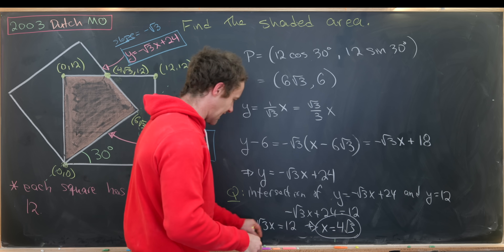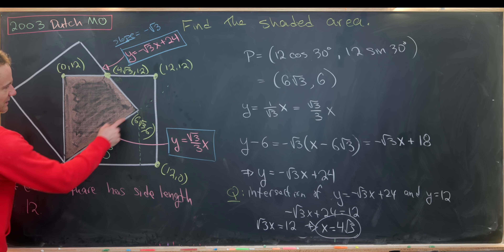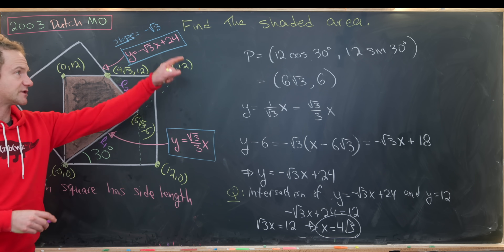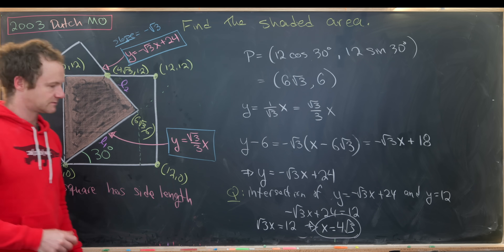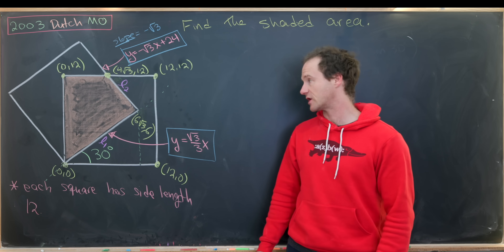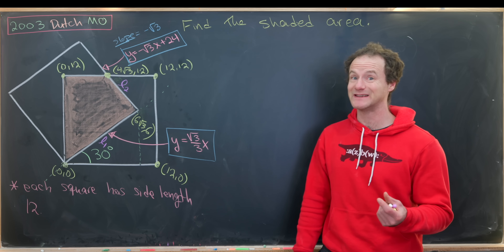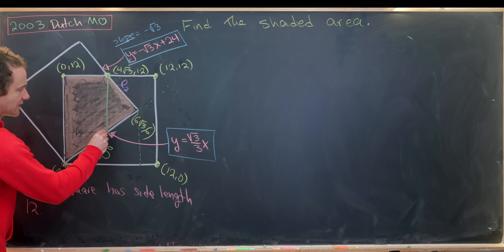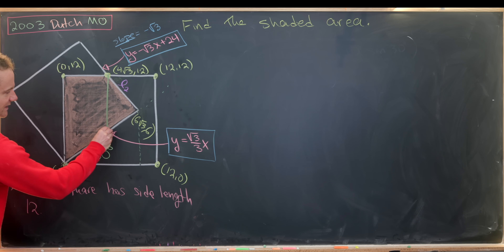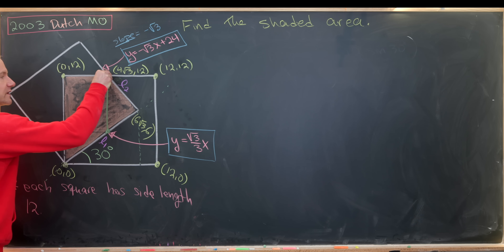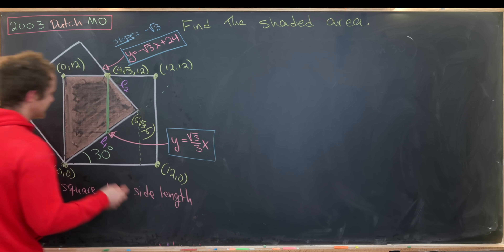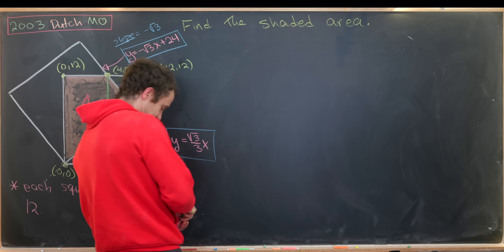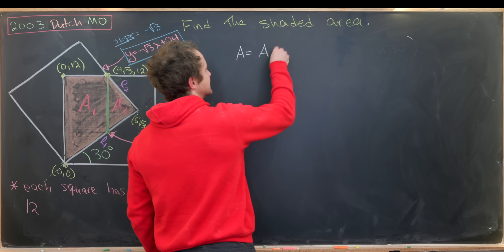Let's give names to these lines: we'll call L1 the lower line and L2 the upper line. We can split the shaded region into two parts by dropping a vertical line at x = 4√3. We'll call these areas A1 and A2, and our goal area A = A1 + A2.